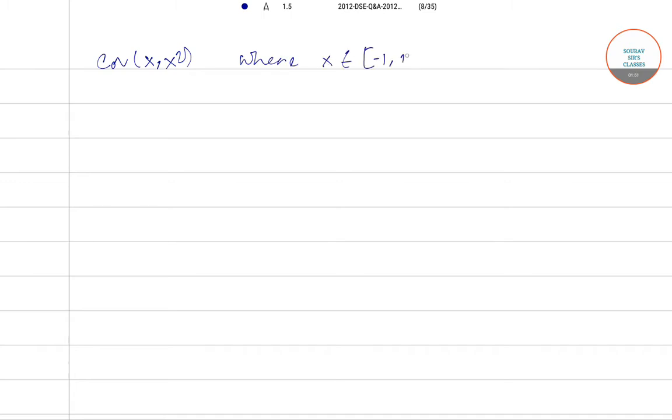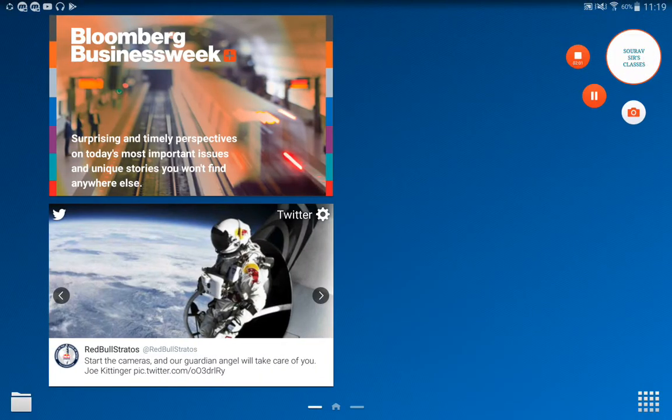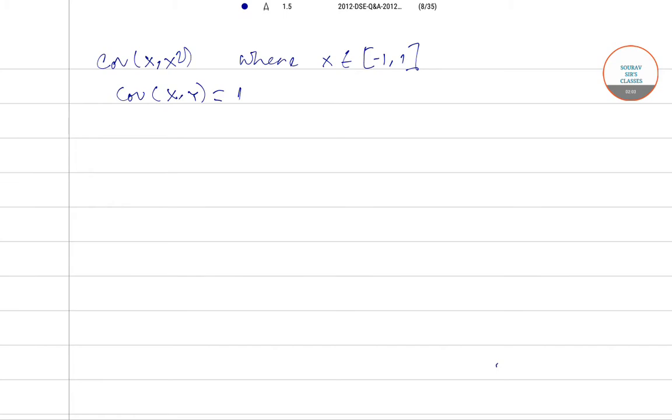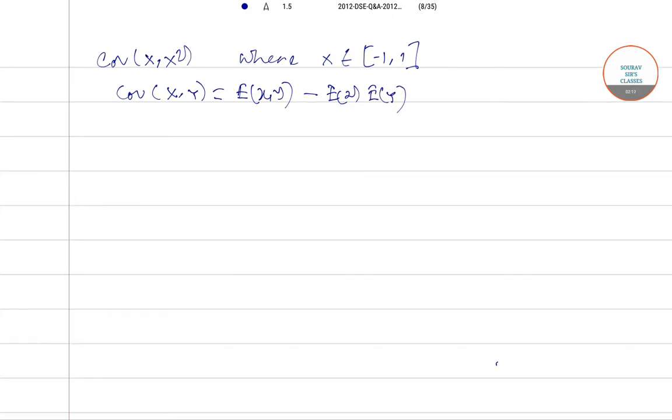Generally, if the covariance is between X and Y, the formula is E(XY) - E(X)E(Y). For our case, it will be E(X·X²) - E(X)E(X²), which is E(X³) - E(X)E(X²).